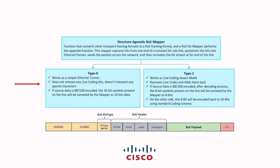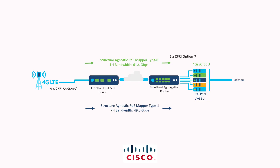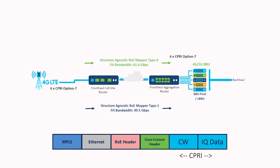In our fronthaul routers, we will use either ROE structure-agnostic mapper type 0 or type 1 to packetize CPRI, convert it to Ethernet packets, and carry it over a fronthaul network using either L2VPN VPWS or EVPN VPWS on an IGP plus SR-MPLS based data plane. If we are using ROE SA mapper type 0, the total bandwidth requirement on the core or fronthaul interface is 6 × 10.23 Gbps, which is 61.4 Gbps. This increased data rate is due to ROE headers, Cisco custom headers, and MPLS headers added to the original bit stream.